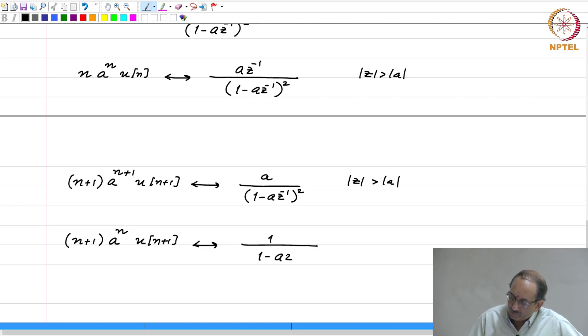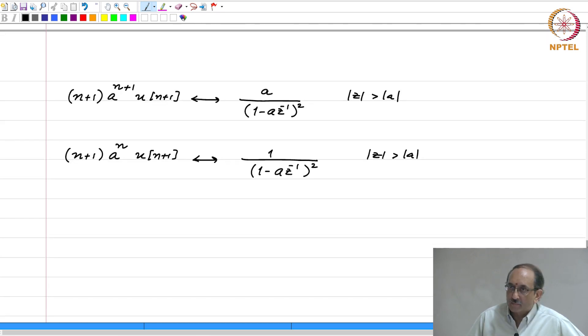This has transform 1 by 1 minus a z inverse whole squared mod z greater than mod a and this in turn is n plus 1 a to the N u of. This can be written as N plus 1 times a to the N u of N because at N equal to minus 1, this is 0. Therefore, this starts off at N equal to 0 and to reflect that you have the expression that is usually written in this form.